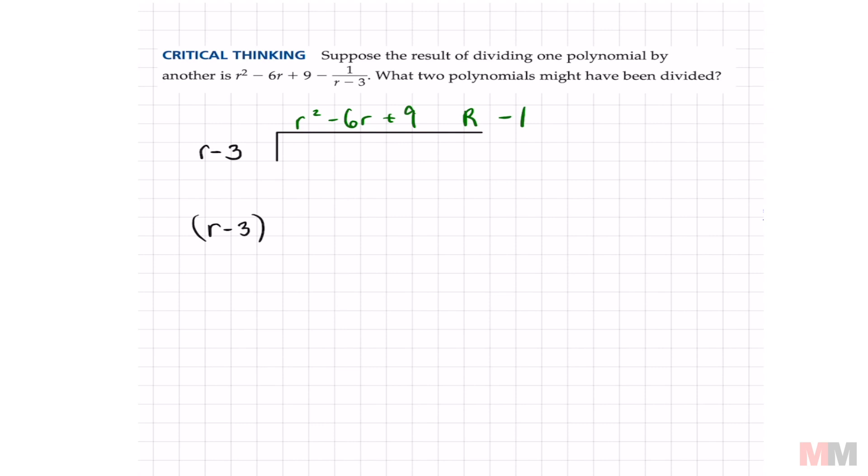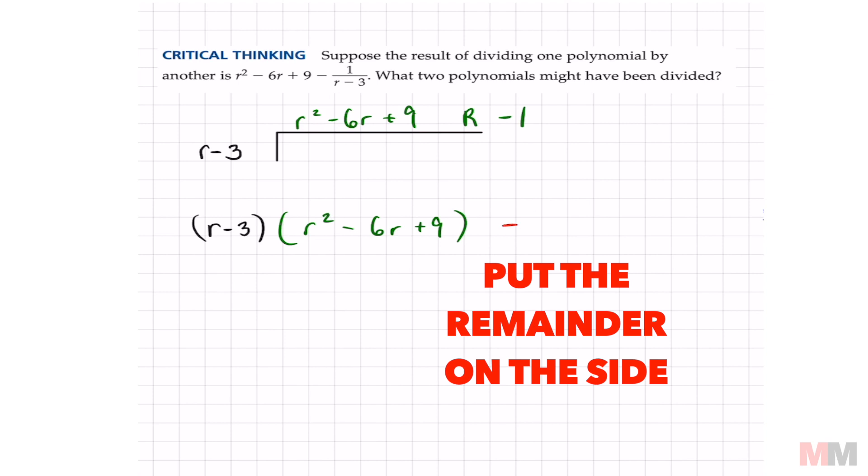r minus 3, and I'm gonna times it to r squared minus 6r plus 9. But I'm not gonna put negative 1 in that parentheses because that's a remainder. We're just gonna put that on the side and put minus 1. So let's go ahead and distribute this.